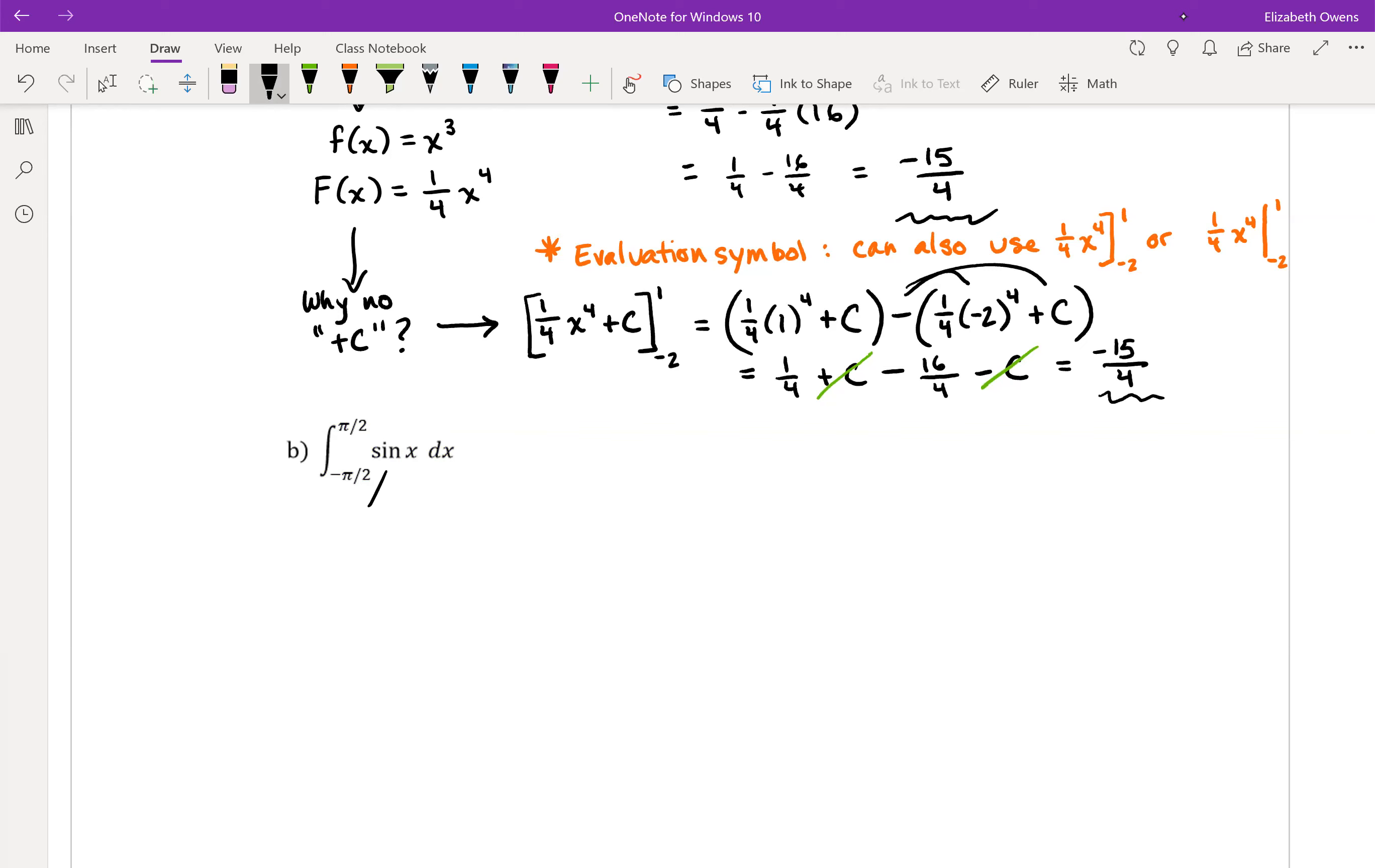So first thing here is to identify what our antiderivative is going to be. Our function here is sine x, and the antiderivative of that is not just cosine x, because the derivative of cosine would be negative sine, so we need this to be negative cosine x for our antiderivative.